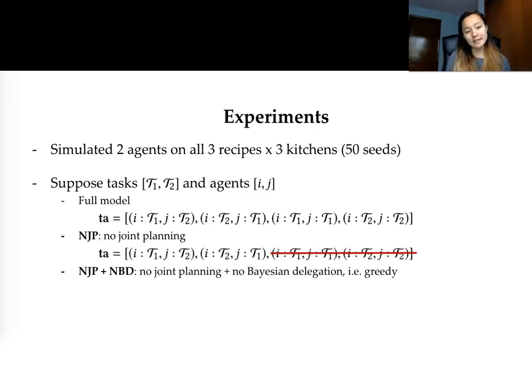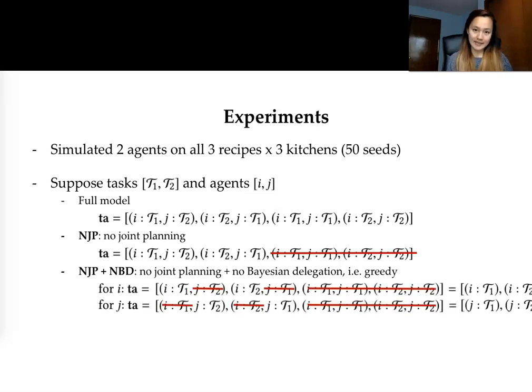The next lesion that we consider is the no joint planning lesion where we're only considering subtasks that can't be shared, so these assignments are completely unique across agents. And finally the last lesion is the no joint planning no Bayesian delegation lesion which incentivizes a completely greedy agent, so the agent only considers tasks allocated to itself.